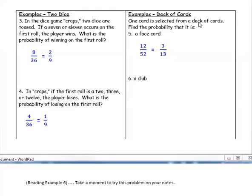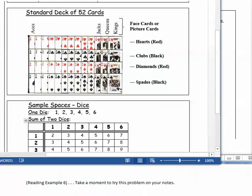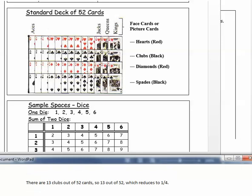Example six. Draw one card from a deck. Find the probability that it is a club. Take a moment to try this problem on your notes. There are thirteen clubs out of fifty-two cards. So our probability will be thirteen out of fifty-two, which reduces to one-fourth.